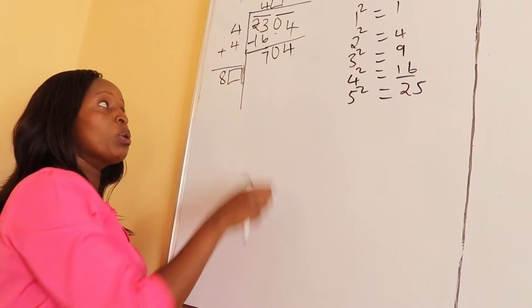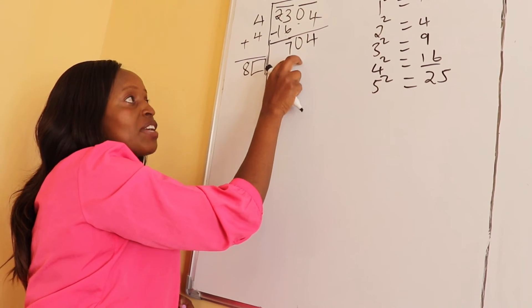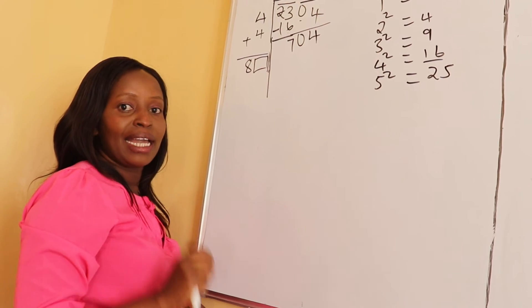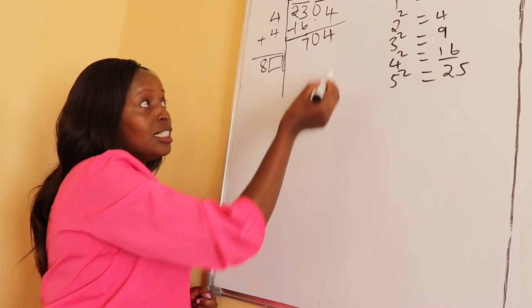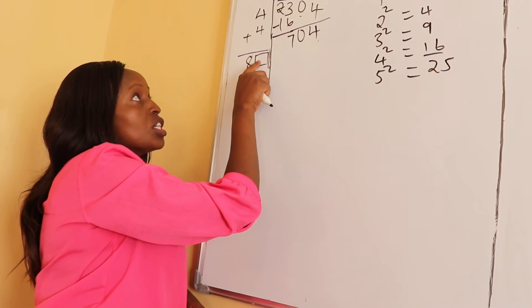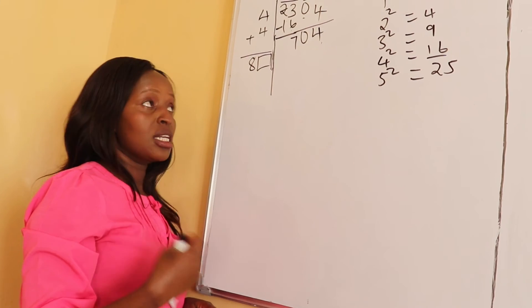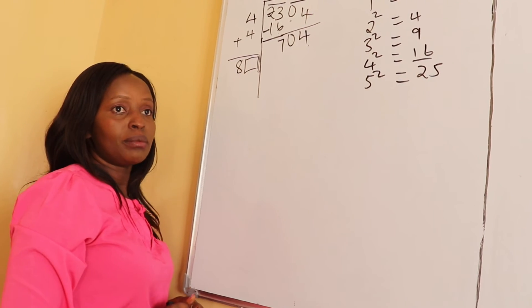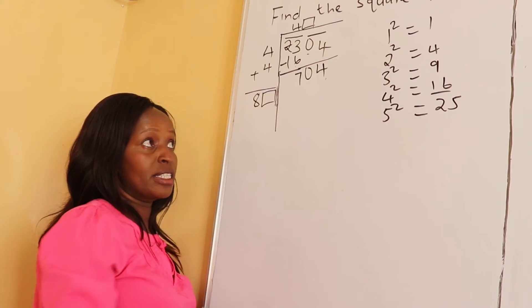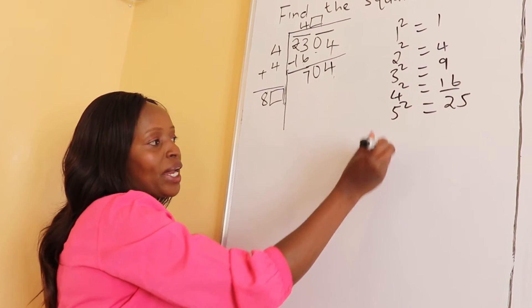After reaching there, we look at a digit that when we put it here and the same digit you put it here, when we multiply it gives us 704. A hint is that the last digit here tries to help us to know which digit we're going to put. We look for a number when we square it, it ends with a 4. One of the numbers is 2, 2²=4. Another number is 8, because 8²=64, it ends with a 4.